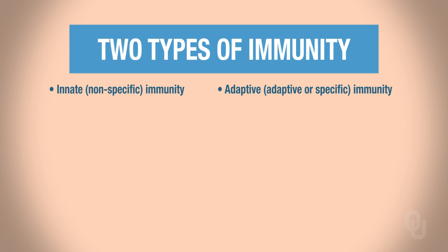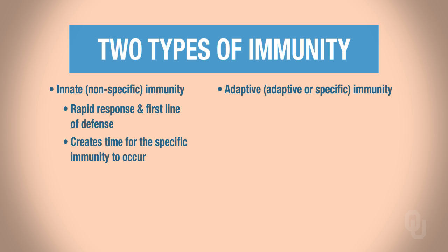To give a quick overview of both: nonspecific or innate immunity is a very rapid response — your first line of defense. It gives your body time for specific immunity to kick in. Innate immunity is always present; it happens as soon as your body is invaded by a foreign object. It's rapid and not selective — it's not targeting specific species of invaders, it just wants to kill foreign invaders. It involves physical and chemical barriers as well as cellular defenses.